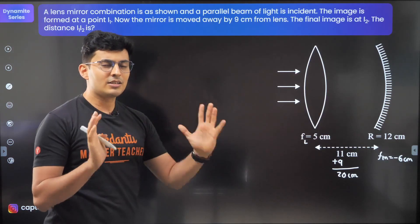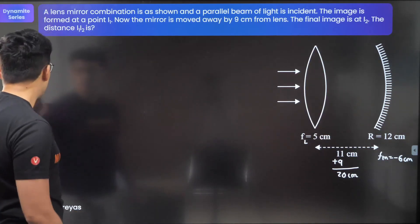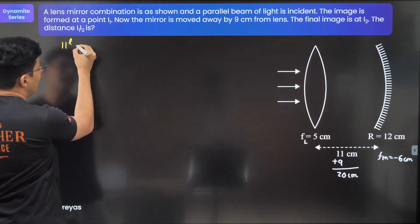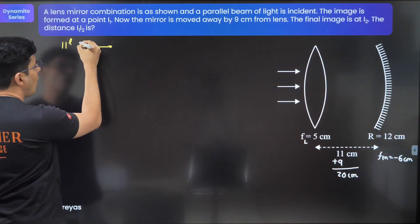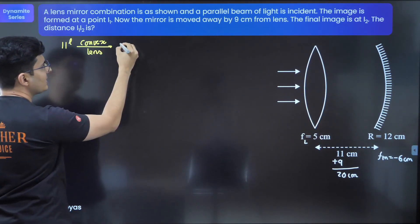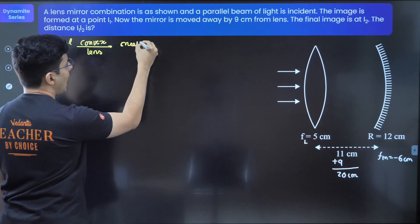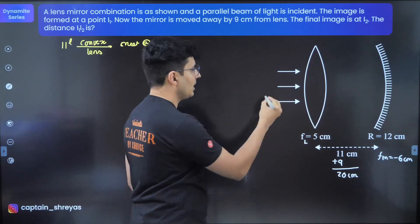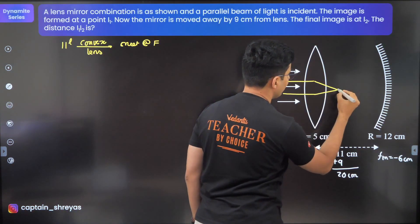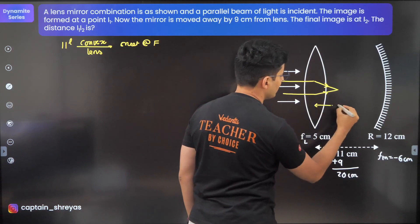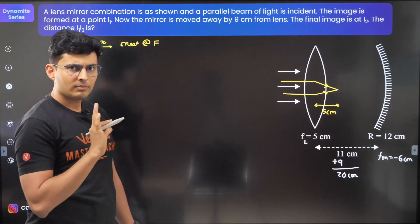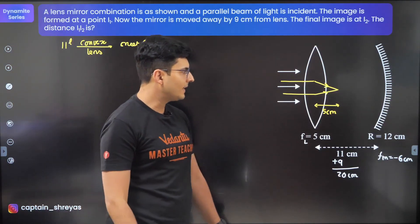Let's redraw the ray diagram. Again we have a parallel beam of light which is incident on a convex lens. Obviously they will meet at the focus. After the refraction, there is nothing which will change, this will still remain as 5 centimeters.